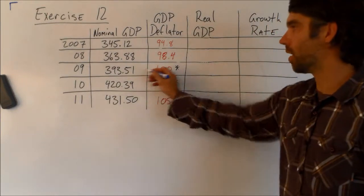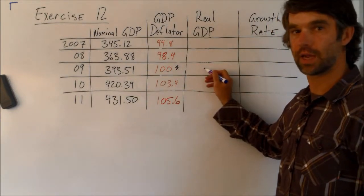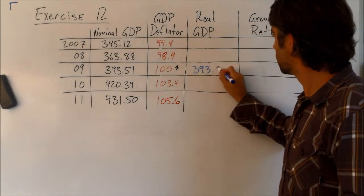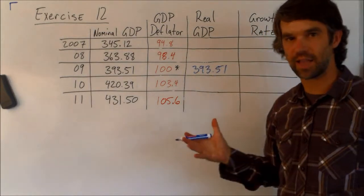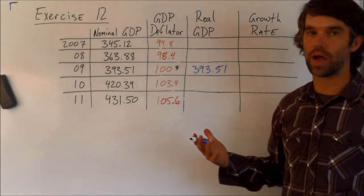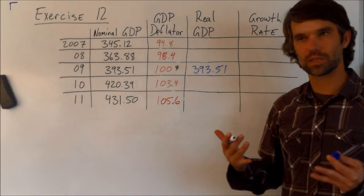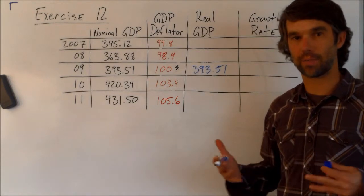So we can go ahead and take this one across, and it's going to be the exact same 393.51. Now for the other four, let's make a quick prediction about what's going to happen with the mathematics.